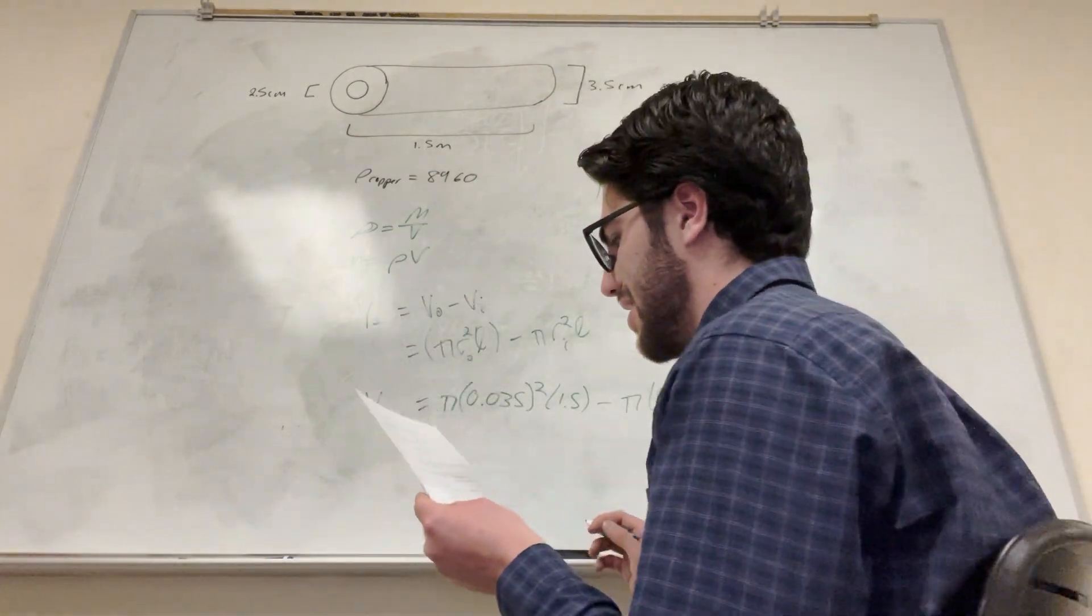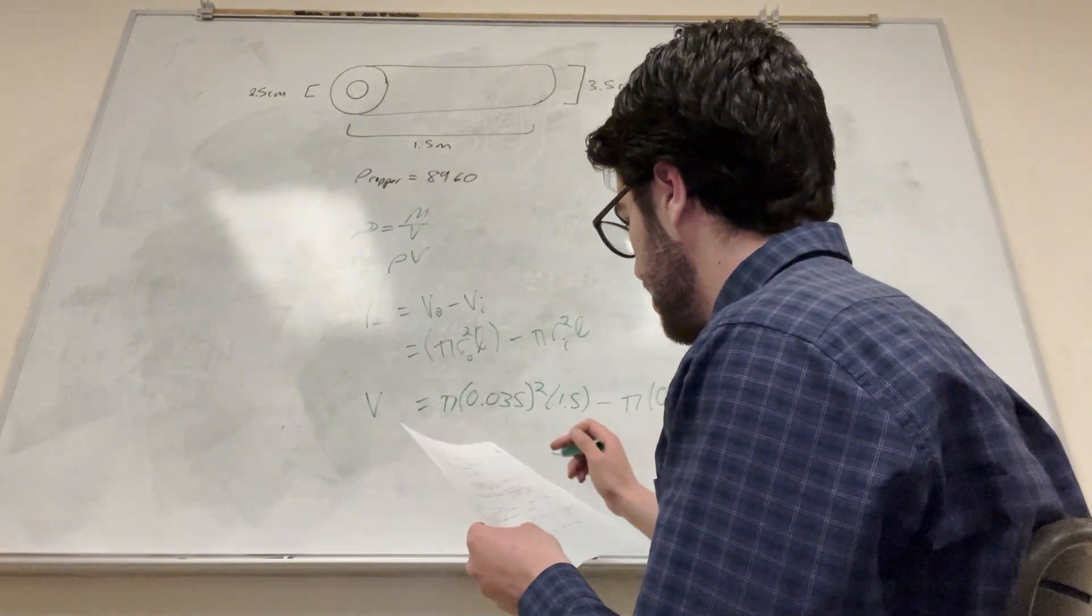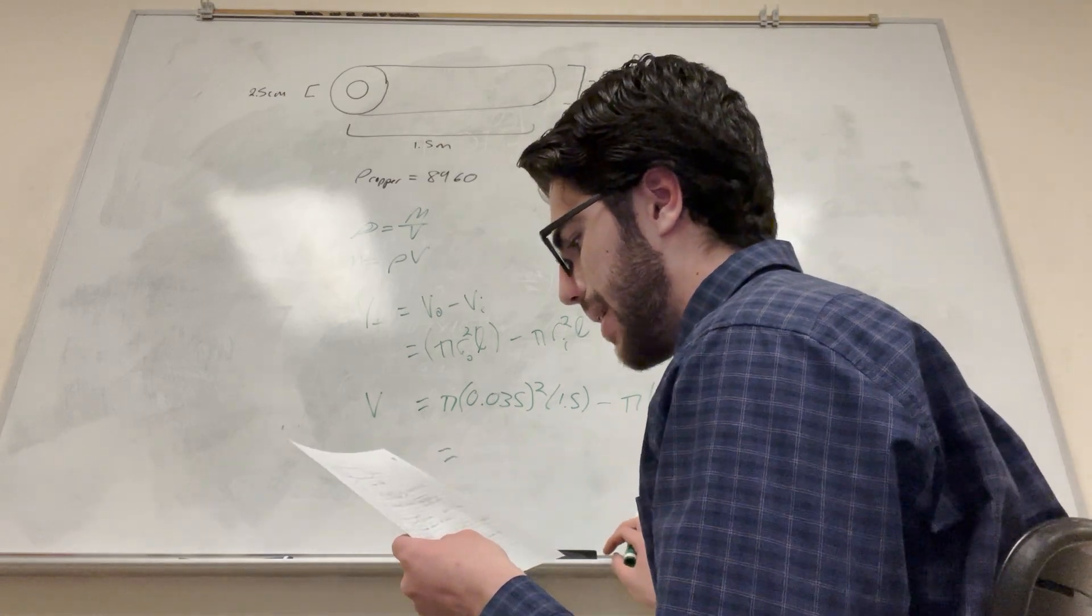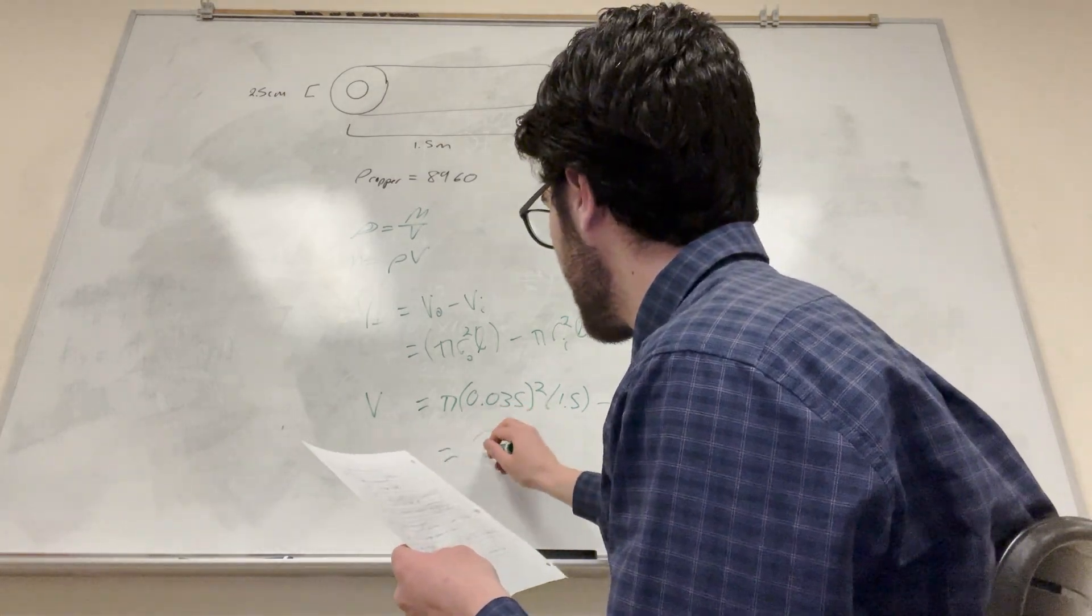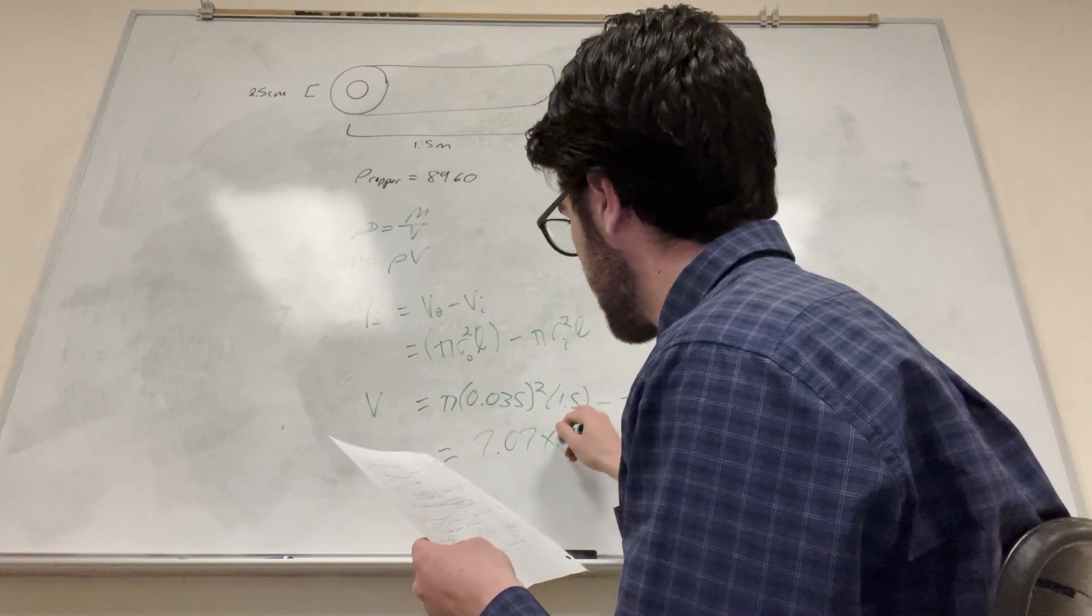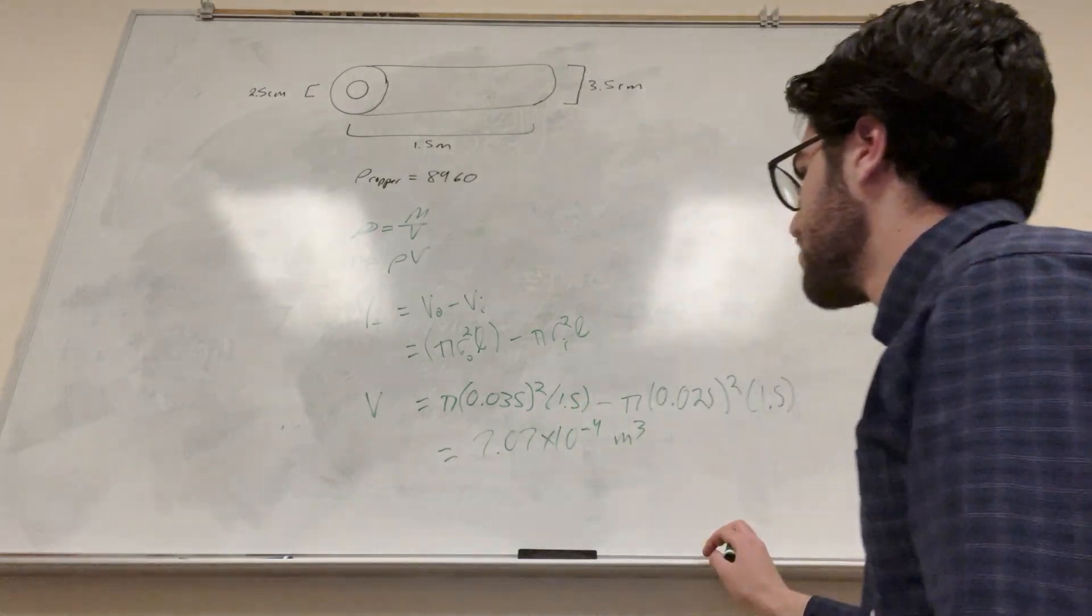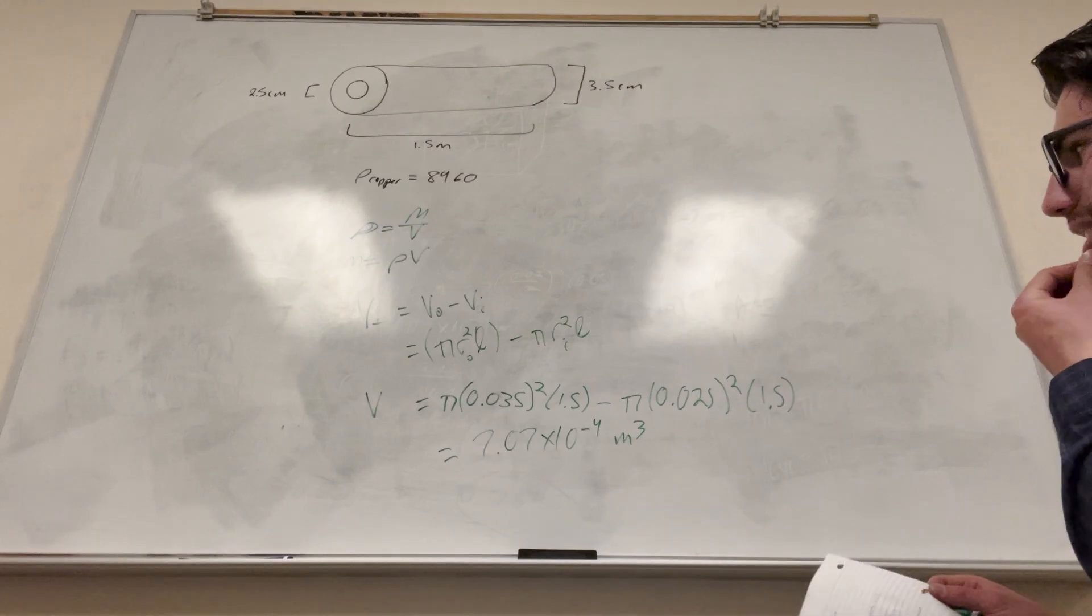That's my answer and it's equal to... Did I not find the mass? I did find the mass, 7.07 times 10 to the negative 4 meters cubed. Perfect. Alright, so we got this number.